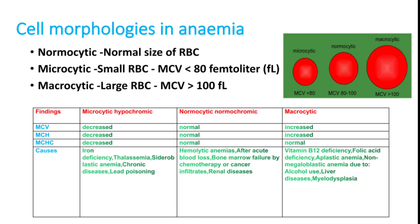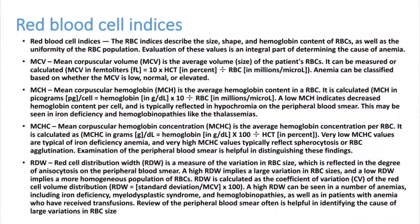Remember: normocytic means MCV 80–100, microcytic means MCV less than 80, and MCV more than 100 suggests macrocytic anemia. For example, a patient with chronic blood loss from the intestine presenting with black stools and low hemoglobin of 8 or 10 with a low MCV most likely has iron deficiency anemia. A chronic vegetarian patient may have B12 deficiency, presenting with anemia and MCV more than 100. These are simple ways to diagnose anemia in the emergency room.